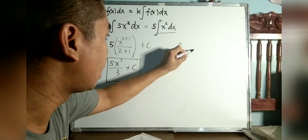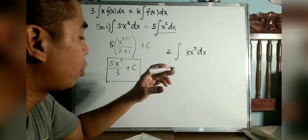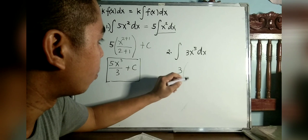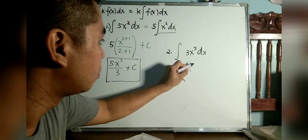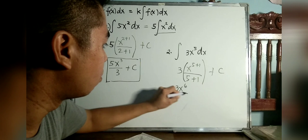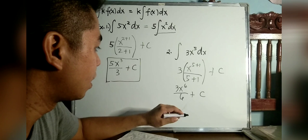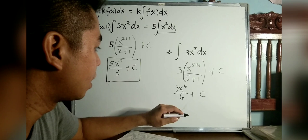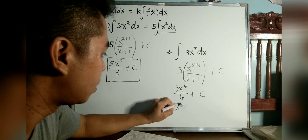Another example: the integral of 3x raised to 5 dx. Factor out the constant: 3 times the integral of x raised to 5 dx. Integrate: 3 times x raised to 5+1 over 5+1 plus c. That gives 3x raised to 6 over 6 plus c. Simplify: 3 over 6 is one half, so the final answer is x raised to 6 over 2 plus c.